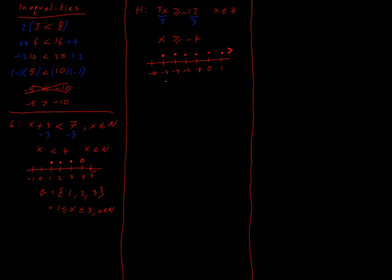To link in sets, I'll state what h equals. So h contains: minus 4, minus 3, minus 2, minus 1, 0, 1, 2, 3, and so on — I put dot dot dot at the end and close the curly bracket. Another way of writing that answer would be: x is greater than or equal to minus 4, where x is an element of ℤ. Those two notations say the same thing.